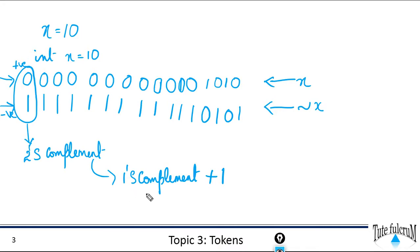So performing 1's complement is equivalent to applying the NOT operator onto the operand. That is inverting the bits of the operand. So to get the result we need to compute the 2's complement of NOT of x.